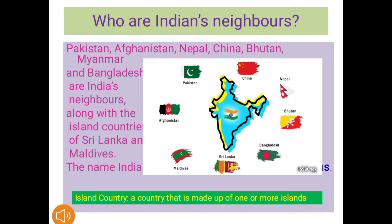On the map you can see Pakistan, China, Nepal, Bhutan, Bangladesh, Sri Lanka, Maldives, and Afghanistan — these are our neighboring countries. An island country means a country that is made up of one or more islands. Sri Lanka and Maldives are island countries. The name India has been derived from the river Indus — memorize this.